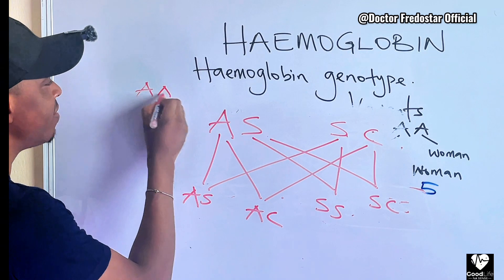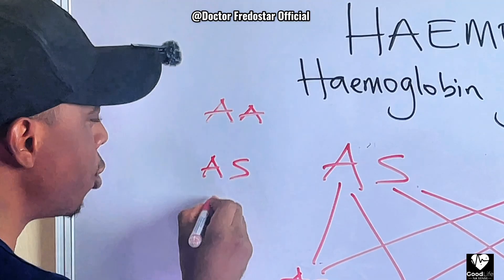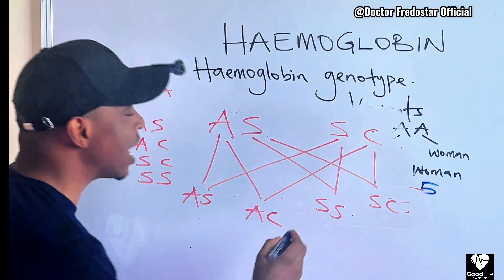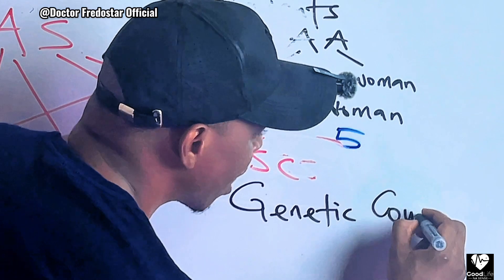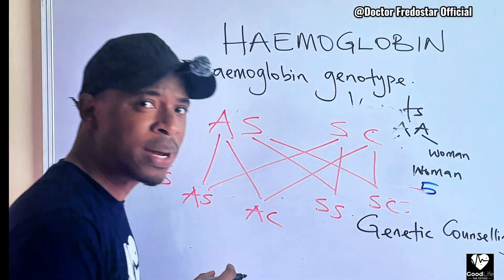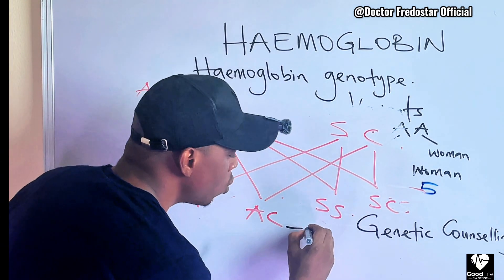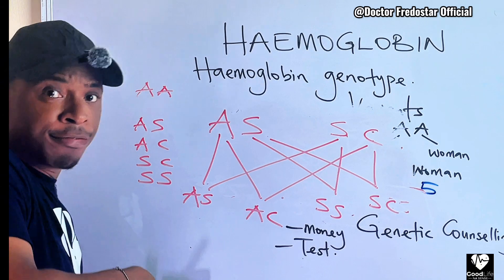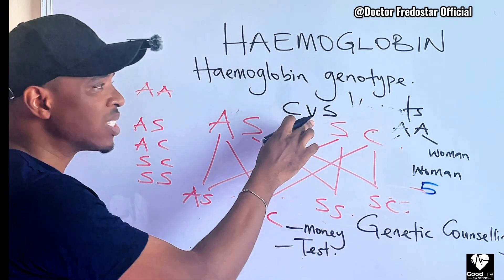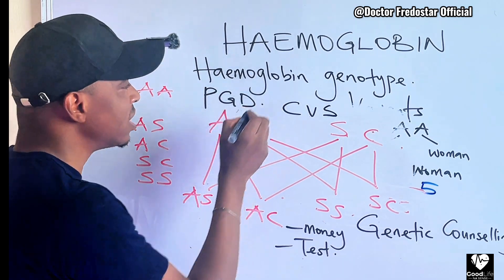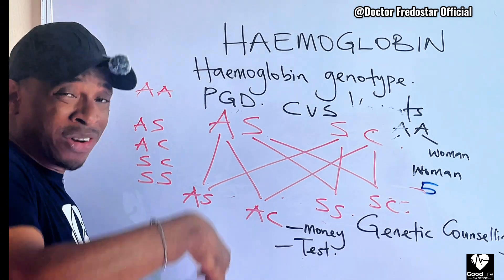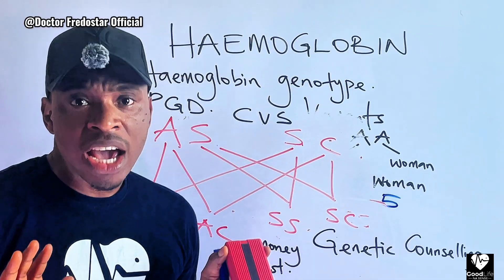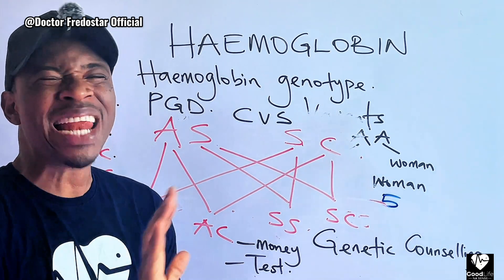That is why we advise: AA can marry any genotype. But if you are AS, AC, SC, or SS, you have to open your eyes well. Number one, you and your partner need to go for genetic counseling — they will talk to you well about the problem ahead. Number two, they will ask if you can afford the tests: things like chorionic villus sampling or pre-implantation genetic diagnosis. These are tests done to know the genotype of the baby while still in the womb, but they are not cheap.